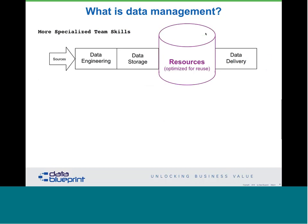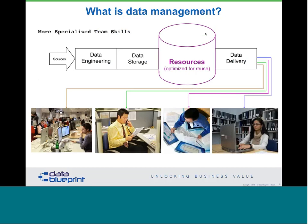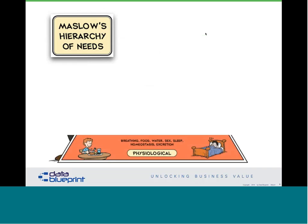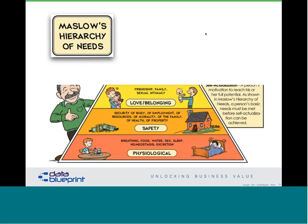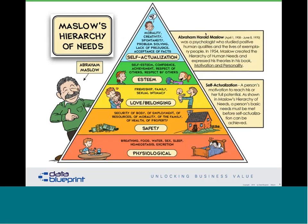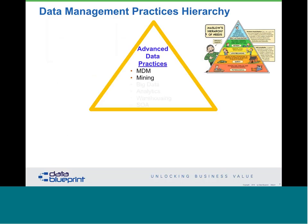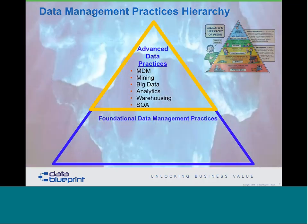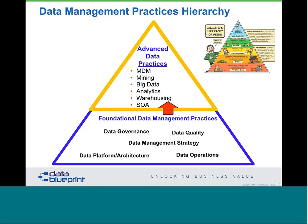We've come up with a newer diagram where we show data as the central resource, being utilized by all knowledge workers in your organization. Each of those knowledge workers can provide feedback that allows us to come back and improve the data. We liken this to Maslow's hierarchy of needs — if your physiological needs are unmet, you can't be safe; you'll never get to belonging or self-esteem, and you can't get to self-actualization. Data is exactly the same way. There's wonderful stuff everyone talks about — MDM, blockchain — but that's just the tip of the iceberg. We need to talk about foundational practices.